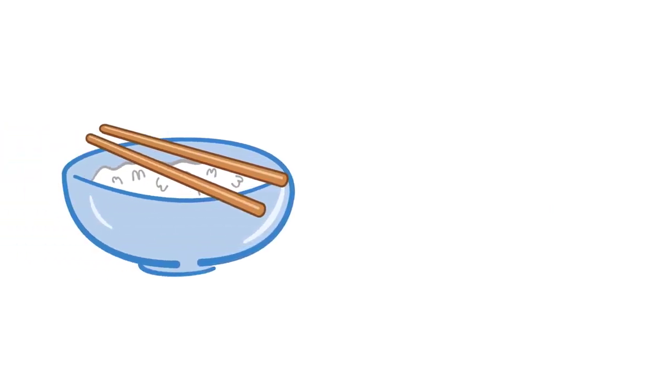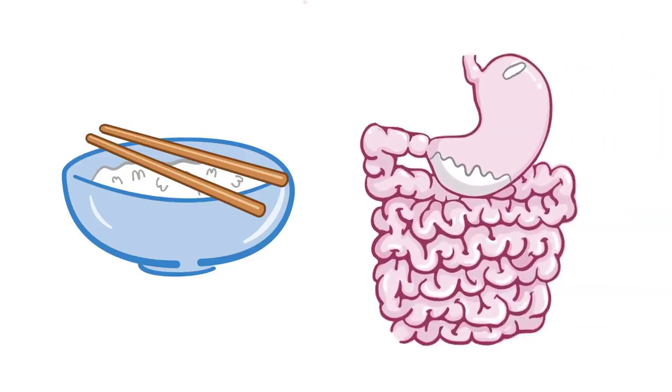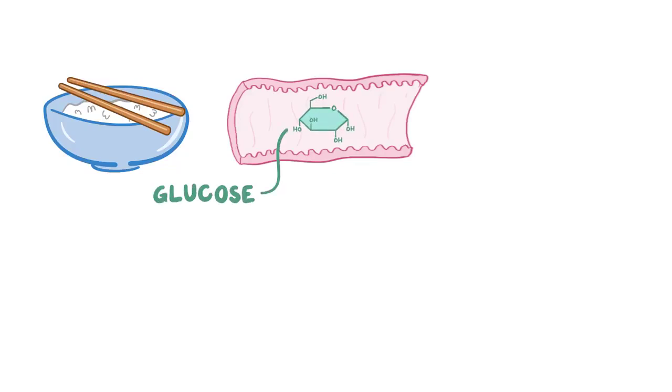Let's say you just ate a carbohydrate-loaded meal, like a bowl of rice. A few hours after you're done, those carbohydrates are broken down in the small intestine into their simplest chemical form, monosaccharides — the most important of which is glucose, which is a 6-carbon molecule that's in the shape of a ring.